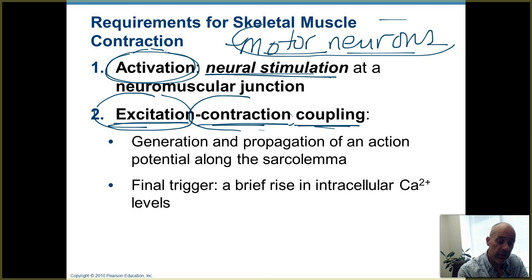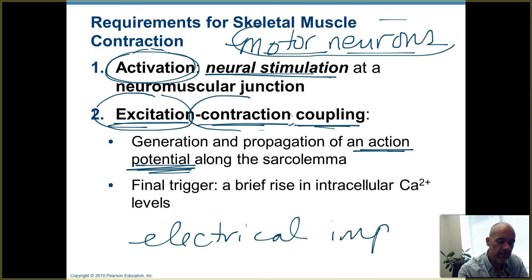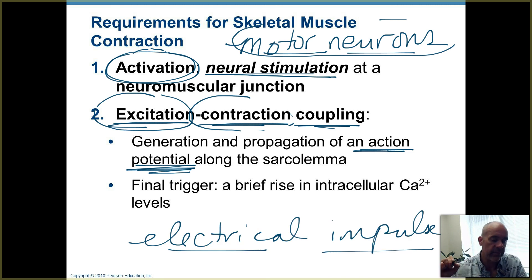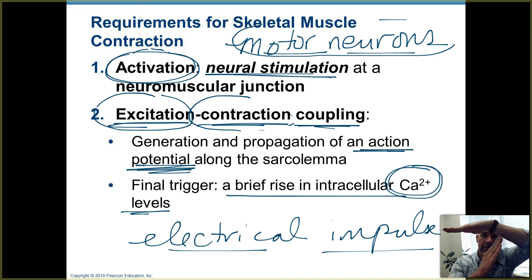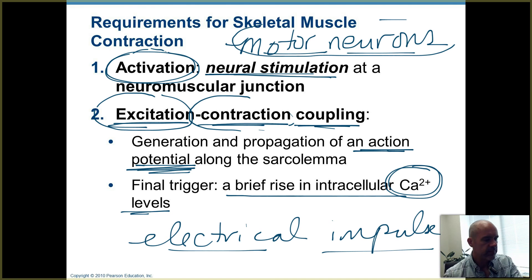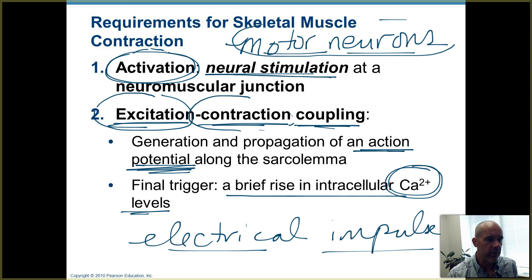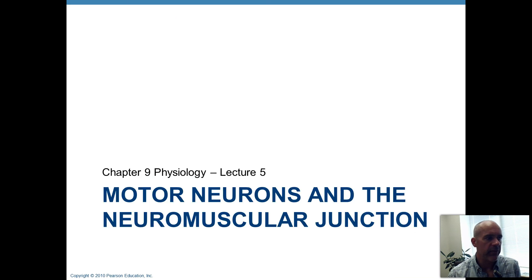That signaling includes something called an action potential, which is basically an electrical impulse. We're going to talk more about what that means — it's not scary. We also mentioned that calcium ions are involved. A brief rise in intracellular calcium ion levels is actually what leads to the actins and myosins coming together and having that sliding walking motion take place.